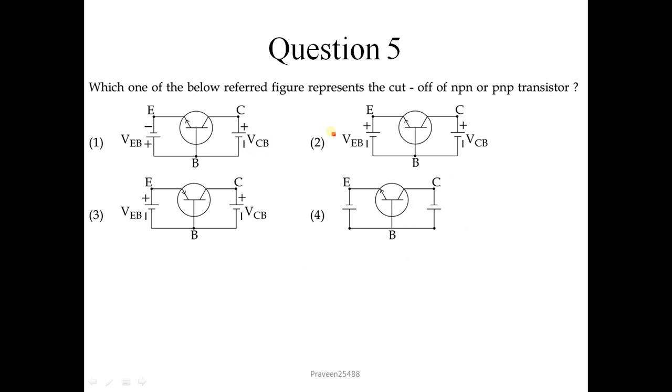Question number 5: Which one of the below referred figure represents the cutoff of NPN or PNP transistor? Cutoff means both junctions should be in reverse bias. We will observe the figure. This is our NPN transistor. If the positive terminal is connected to N type substrate and negative terminal is connected to P type substrate, this junction is in reverse bias. Similarly for this also it is in reverse bias. So this figure shows that our NPN transistor is in cutoff. Correct option is 2.